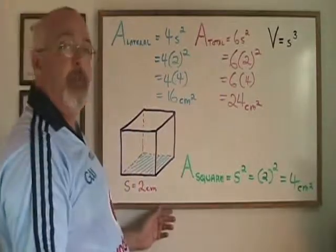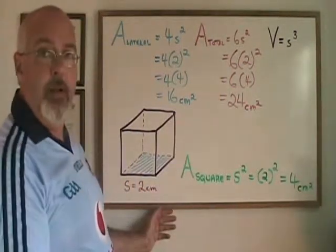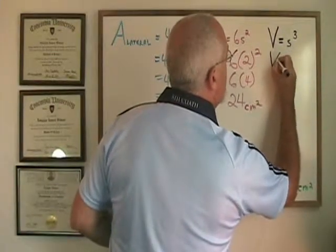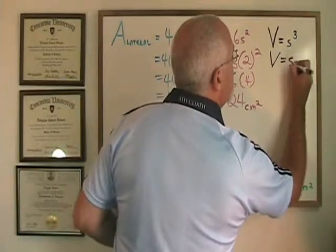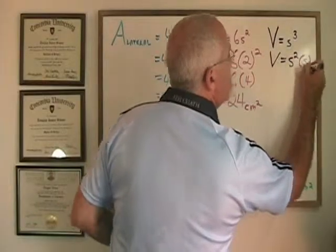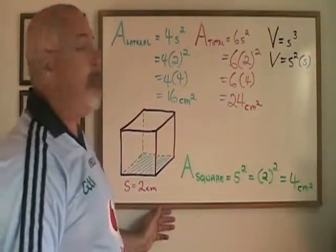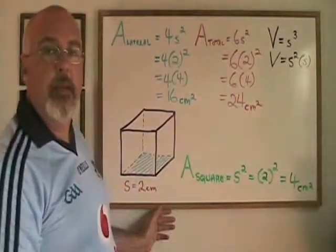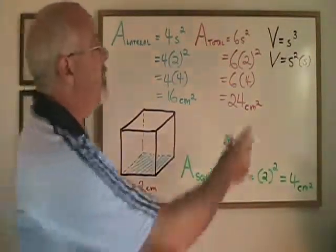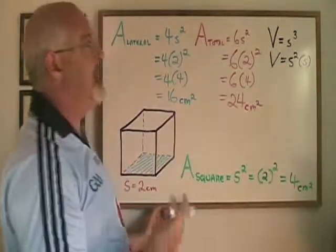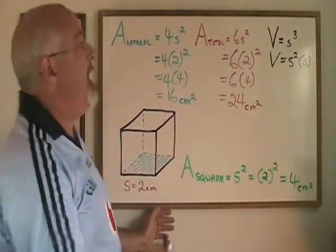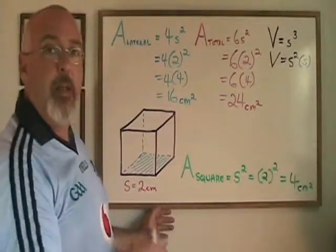The volume of a cube is s cubed. And that can be written, if we want, as s squared times another s. Because s squared times s is s cubed and means the same thing as s cubed. So again, we have that s squared, which is the area of the square on the bottom of this cube. And we're just multiplying it by the side length one more time.